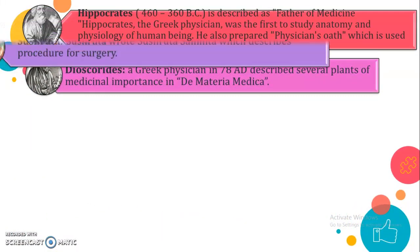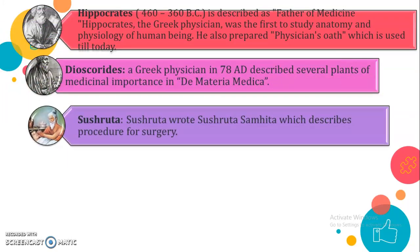Hippocrates was known as the father of medicine and dealt with the study of human anatomy and physiology. In 462–360 BC, he was a Greek physician and the first to study anatomy and physiology of human beings. He also prepared a physician's oath which is used till today. The next scientist is Dioscorides, in 40–80 AD, a Greek physician who described several plants of medicinal importance in a book called The Materia Medica.